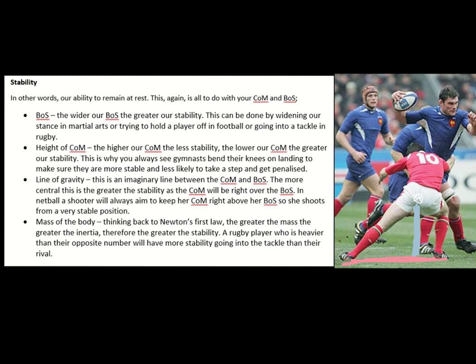In contrast, the French player mainly has only one foot in contact with the ground, giving him a very small base of support. He's standing very tall so his centre of mass is high, and there's no direct line of gravity — his centre of mass is not above his base of support. So when the Welsh player hits him, he's going to knock him down. You can't always get yourself into a balanced position when about to be tackled, but this illustrates how centre of mass and base of support affect whether you're balanced or unbalanced.